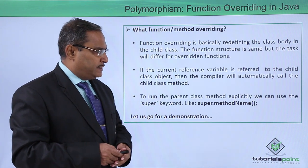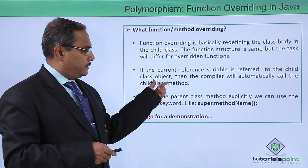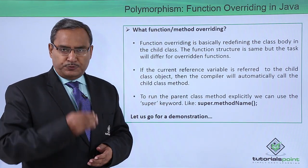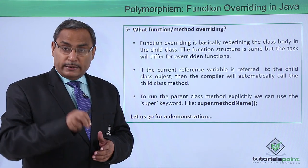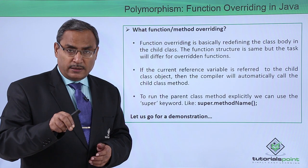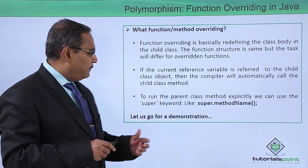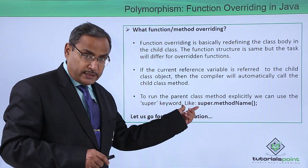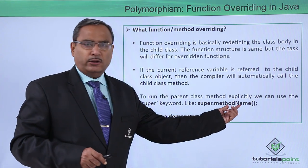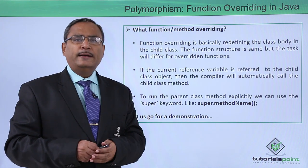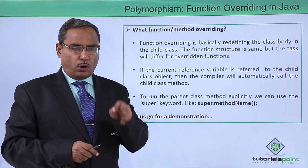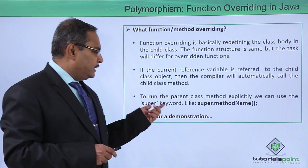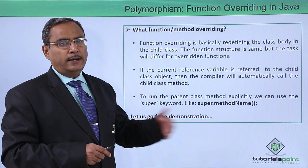If the current reference variable is referred to the child class object, then the compiler will automatically call the child class method. That means from the object of the child class, if you call that respective method, the method defined in the child class will be called, not the base class method. To run the parent class method explicitly, we can use the super keyword, and the syntax is super dot method name. So if you want to call the method defined in the base class, you call it explicitly using the super keyword.